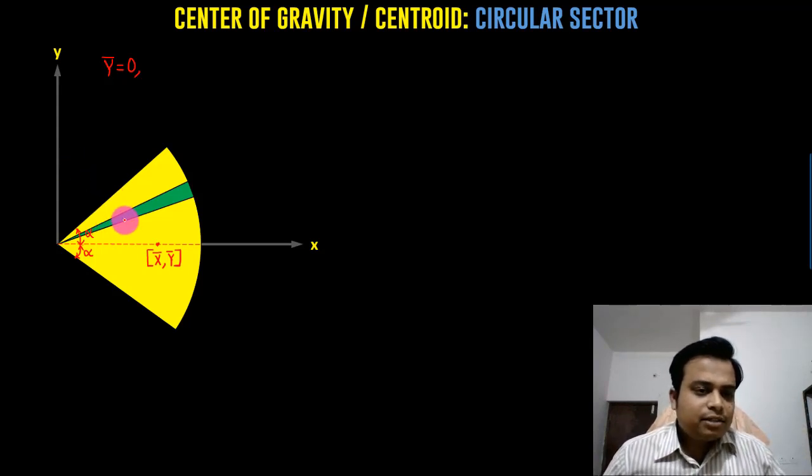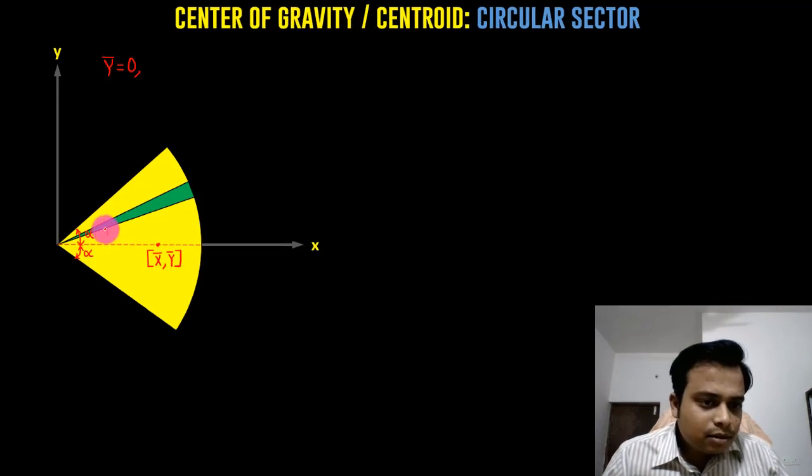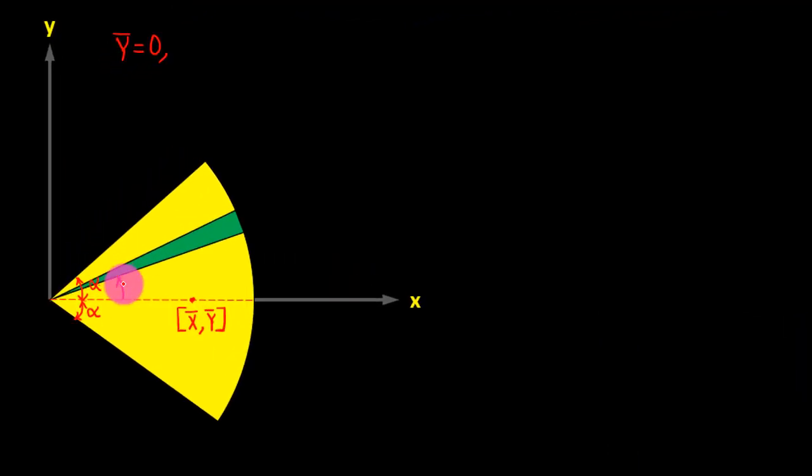If you watch carefully, this small little strip is at an angle of theta, and over here, the small angle made is represented by dθ. If you watch carefully from here till here, let's say that the distance is r. If this is r and this is dθ, then the length of this arc, this very small arc, can be written as r dθ.